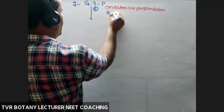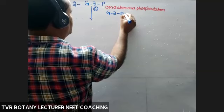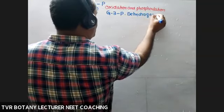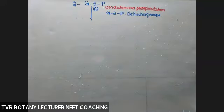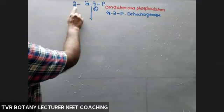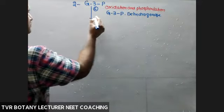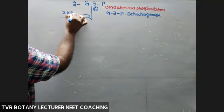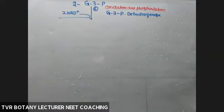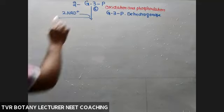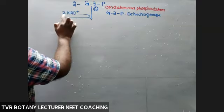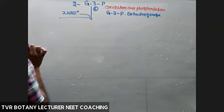The enzyme is glyceraldehyde-3-phosphate dehydrogenase. With two molecules of G3P, how many molecules of NAD are needed? NAD is a coenzyme or cofactor. Two molecules of G3P require two molecules of the oxidized form of NAD — a one-to-one ratio. This is very important. Remember that.